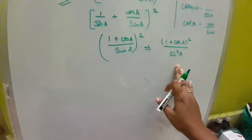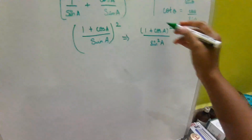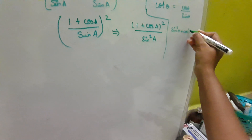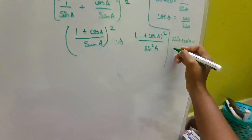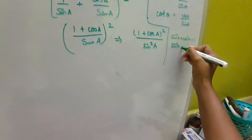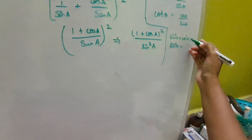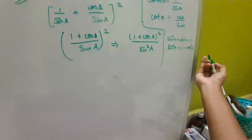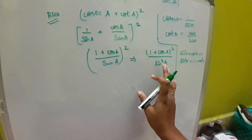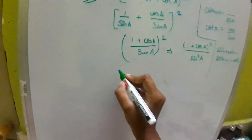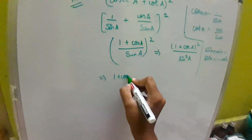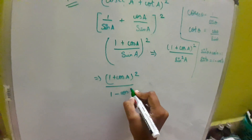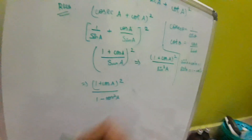Now I am going to use a formula instead of sin squared A. We know that sin²θ + cos²θ = 1, so sin²θ = 1 minus cos²θ. So instead of sin squared A, I am going to write 1 minus cos squared A in the denominator.